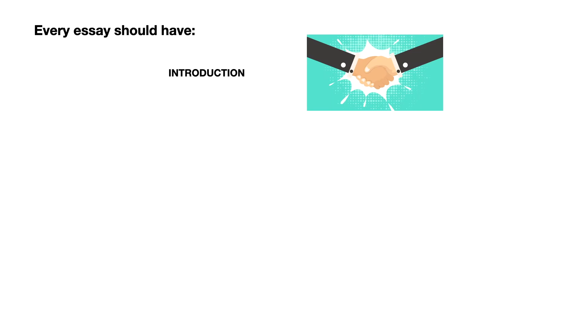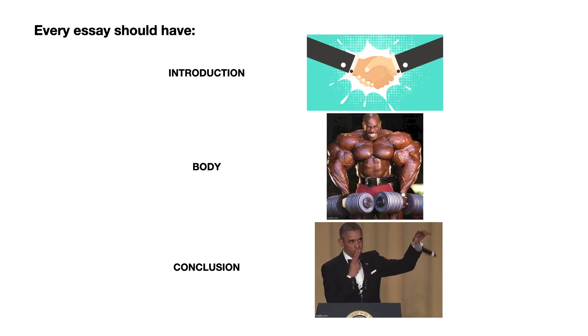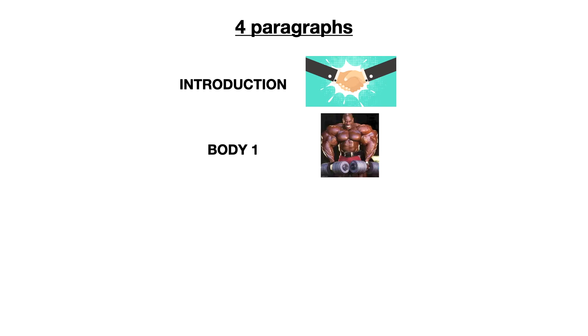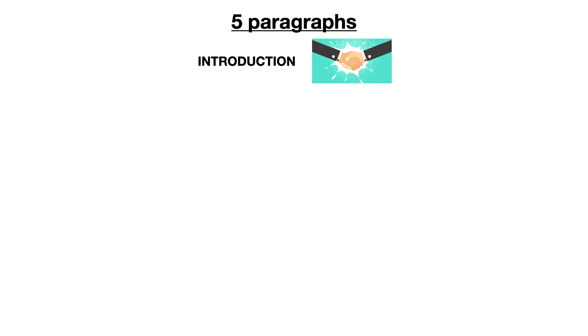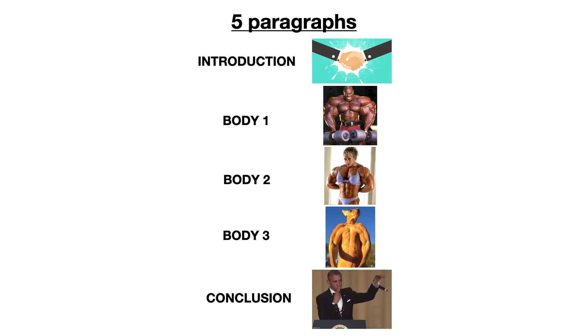Every essay should have different sections. There should be an introduction, a body section, and a conclusion. The body section of your essay is where you present and support your main ideas or arguments — we'll look at that in more detail in the next video. If you write four paragraphs, you will have an introduction paragraph, a body one paragraph, a body two paragraph, and a conclusion paragraph. If you write five paragraphs, you will have an introduction, body one, body two, body three, and a conclusion paragraph.